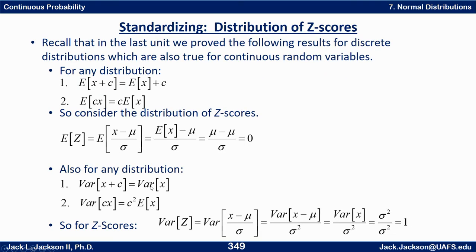Recall in the last unit we proved the following results for discrete distributions, and these also turn out to be true for continuous random variables as well. The expected value of x plus some constant c is the expected value of x plus c — so if you shift the random variable you shift its mean by the same amount. The expected value of a constant times x is that constant times the expected value of x, meaning if you multiply x by a constant you multiply the mean by the same amount.